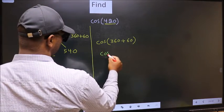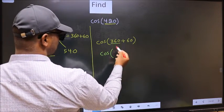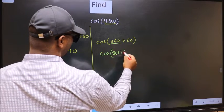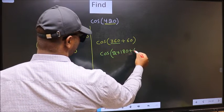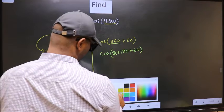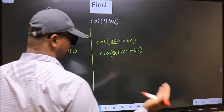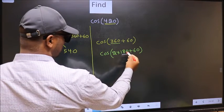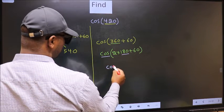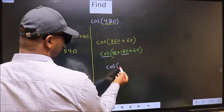Next, cos. In place of 360, now we write 2 × 180 plus 60. Next, here we have 180. So cos is not going to change. It will remain cos. And inside, we get this angle 60.